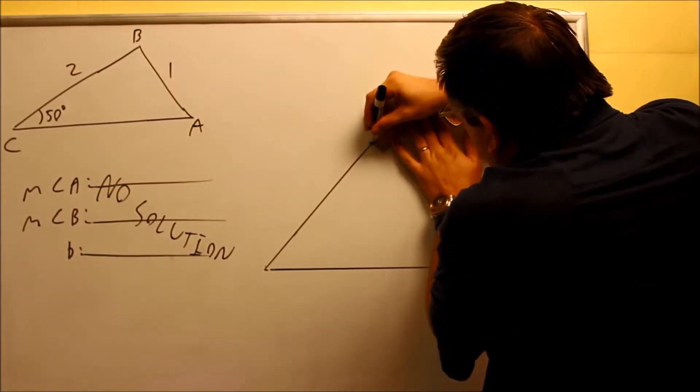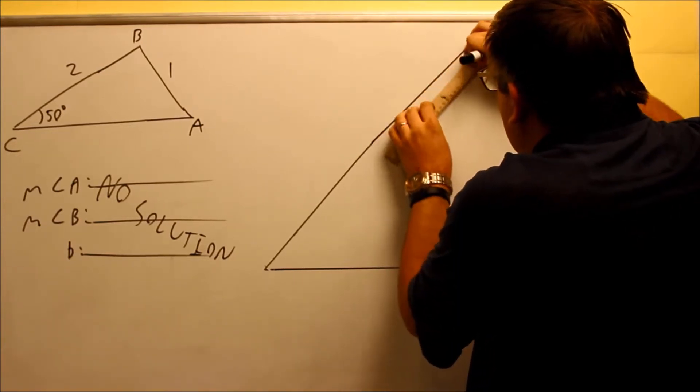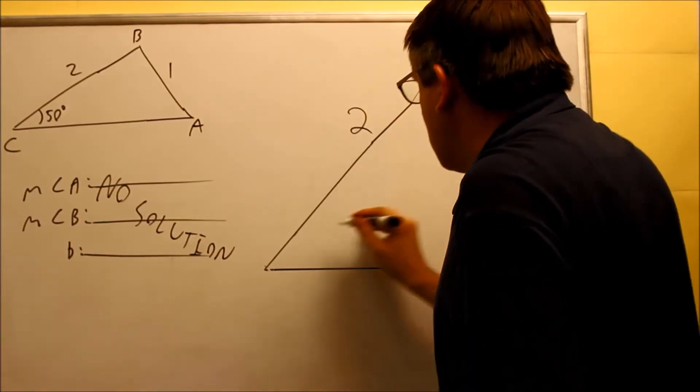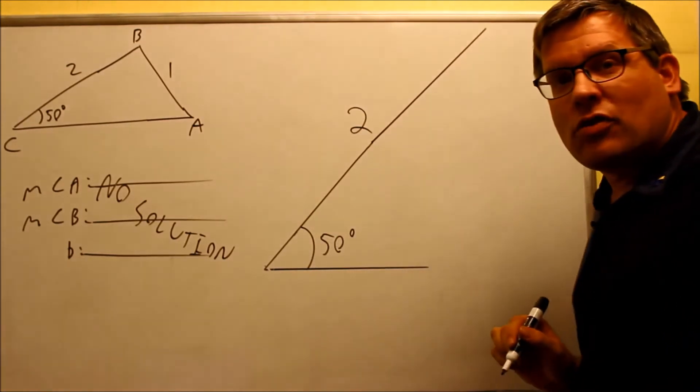And so that's two ruler lengths. This is going to be a two, and this angle I drew accurately to be 50 degrees.